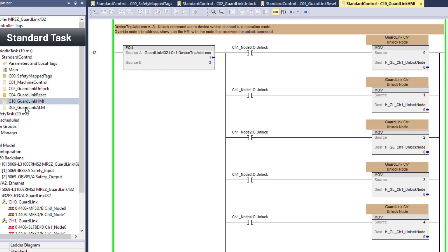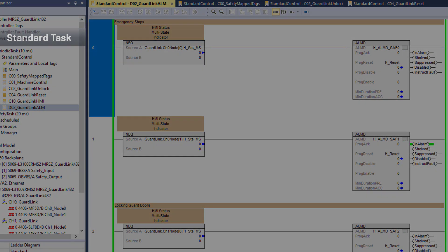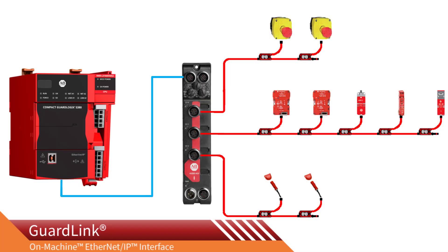The D02 GuardLink alarm routine contains alarm digital instructions configured to provide alarming for the safety system. Now that the GuardLink interface module has been configured and the GuardLink system programming is complete, we are ready for a system demonstration. The system demonstration is a topic for another video.